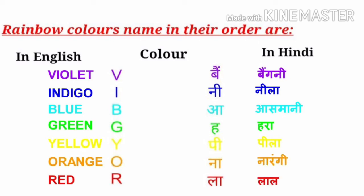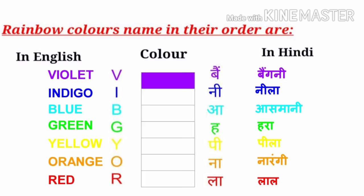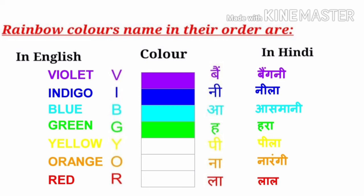Now we will fill the color section. Violet or Benni, Indigo or Neela, Blue or Asmani, Green or Hara, Yellow or Peela, Orange or Narangi, Red or Lal.